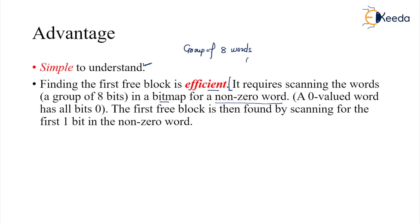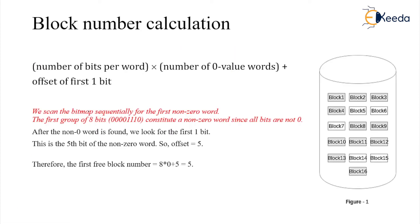All zero means all eight bits are zero, meaning the block is occupied. It should be non-zero because 1 means free. A zero-value word has all bits as zero. The first free block is found by scanning for the first 1-bit in the non-zero word. First you find the non-zero word, then within that you scan for the first 1-bit to get the answer. The block number equals the number of bits per word — suppose 8 bits per word.